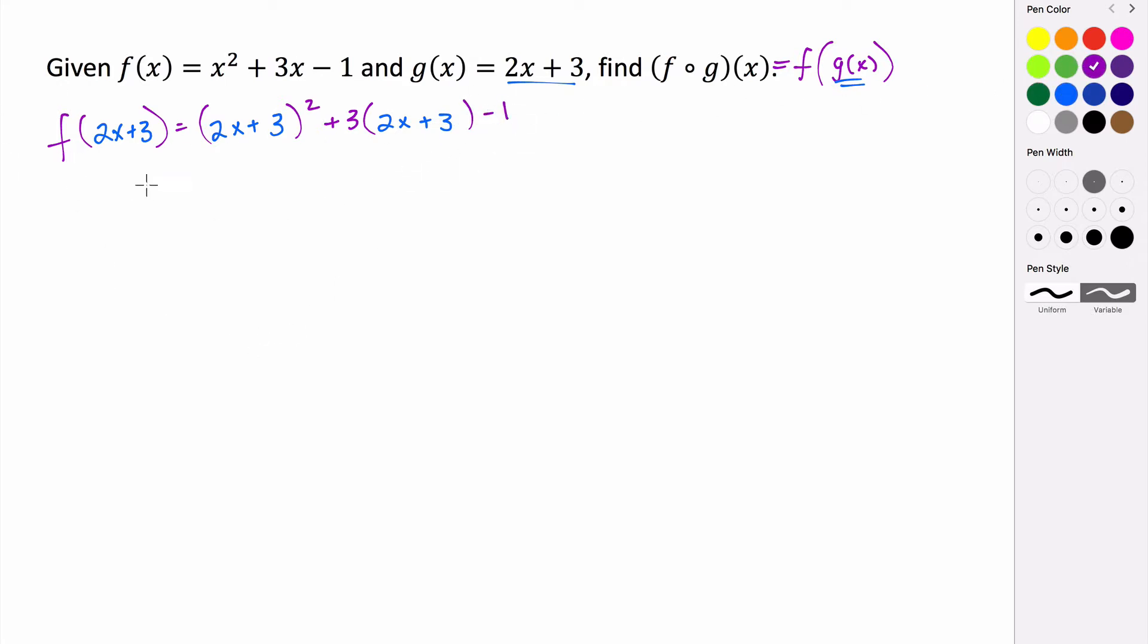So to evaluate this, this is f of g. To evaluate this, we're going to square this and we're going to have to distribute and then combine like terms. So we're going to have to distribute and then this is going to be squared.